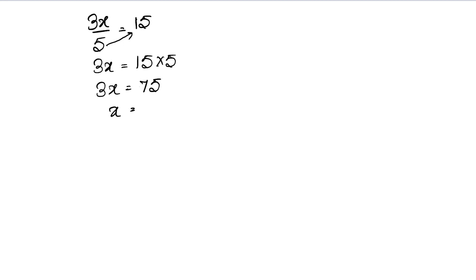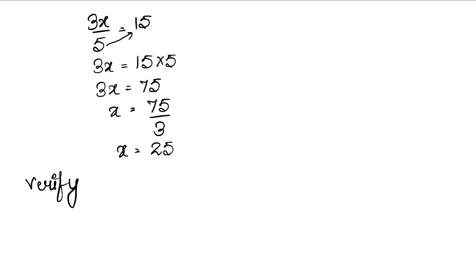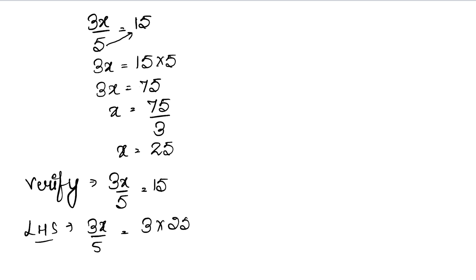Now how much will x come to? There is 3 and x multiplied together. So 3 on the left side will divide to the right hand side. 75 divided by 3 gives x equals 25. Now we verify: left hand side is 3x upon 5, and x is 25, so it is 3 times 25 upon 5. 25 upon 5 is 5, and 3 times 5 is 15. So left hand side equals 15, which equals the right hand side. Left hand side is equal to right hand side.